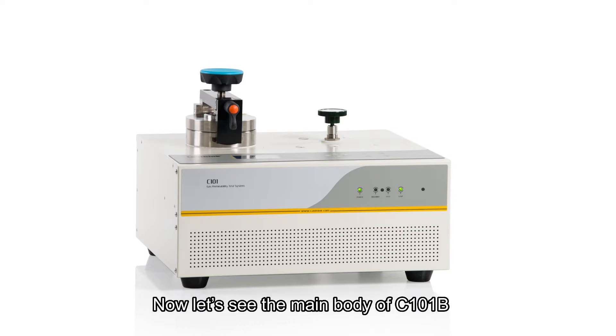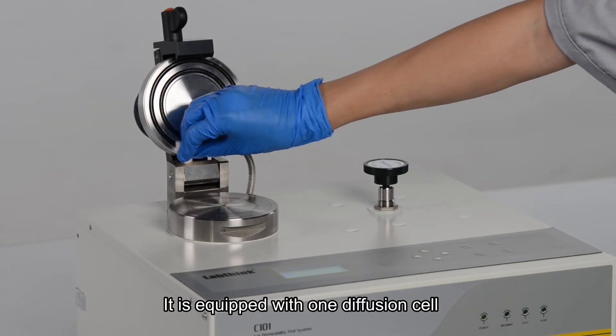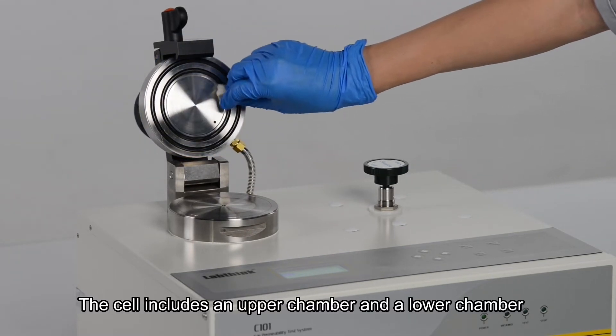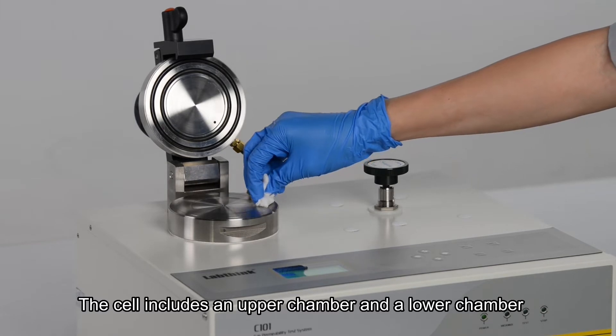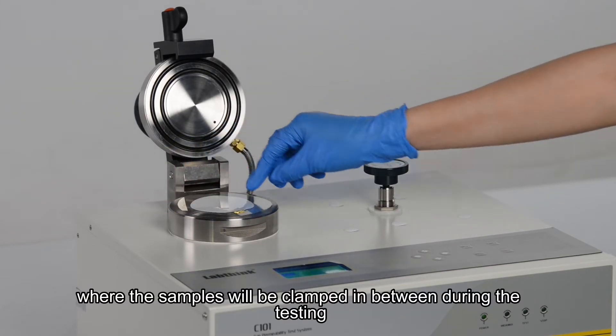Now let's see the main body of C101B. It is equipped with one diffusion cell. The cell includes an upper chamber and a lower chamber, where the samples will be clamped in between during the testing.